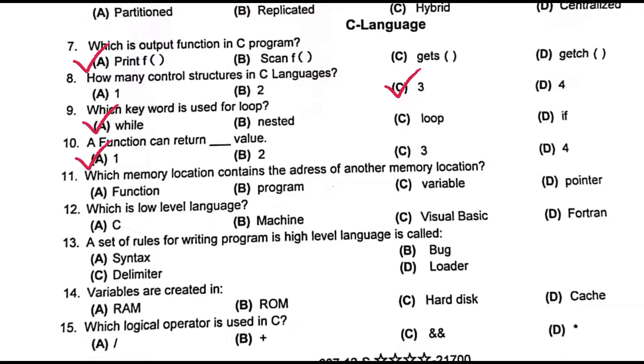Which memory location contains the address of another memory location? Pointer. Which is low level language? Machine. A set of rules for writing program in high level language is called syntax. Variables are created in RAM. Which logical operator is used in C? Option C.